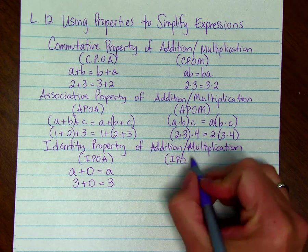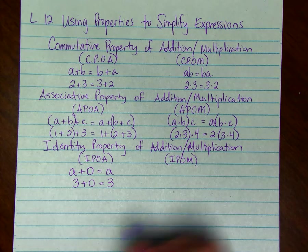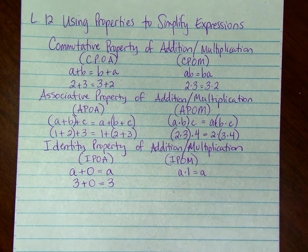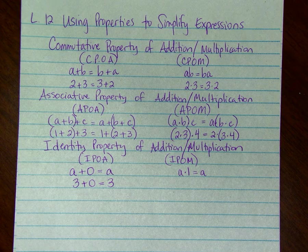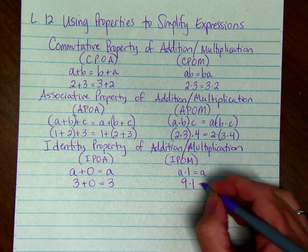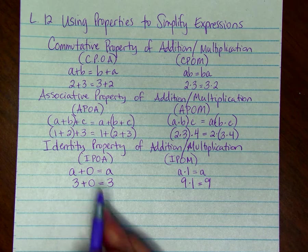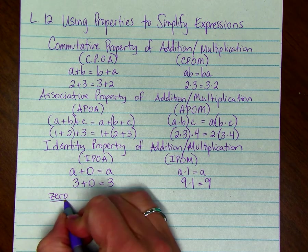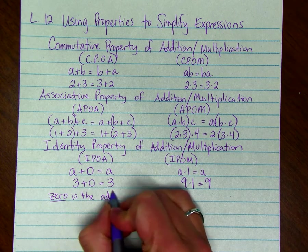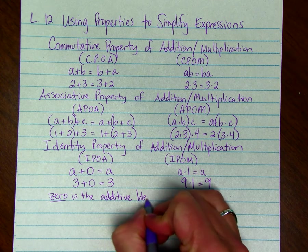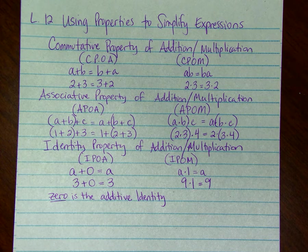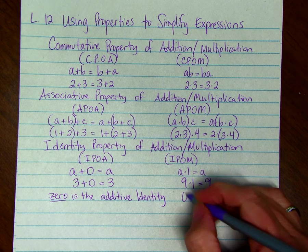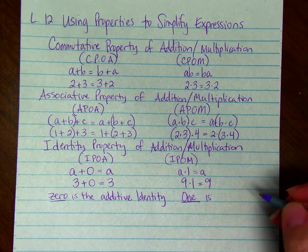For the identity property of multiplication, when we multiply by 1, we get to keep the identity — A stays equal to A. For example, 9 times 1 equals 9. Because when we add 0 it stays the same, 0 is called the additive identity. And because we multiply by 1 to get the same answer, 1 is called the multiplicative identity.